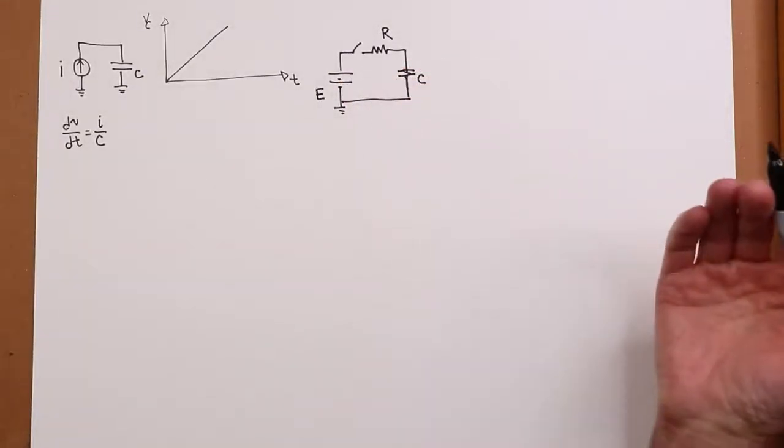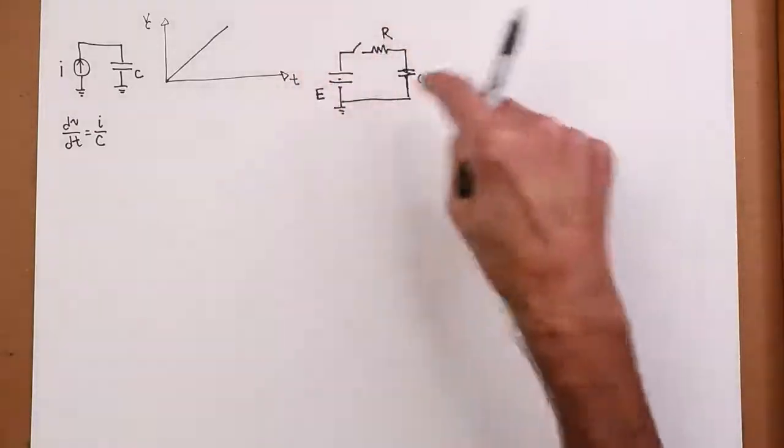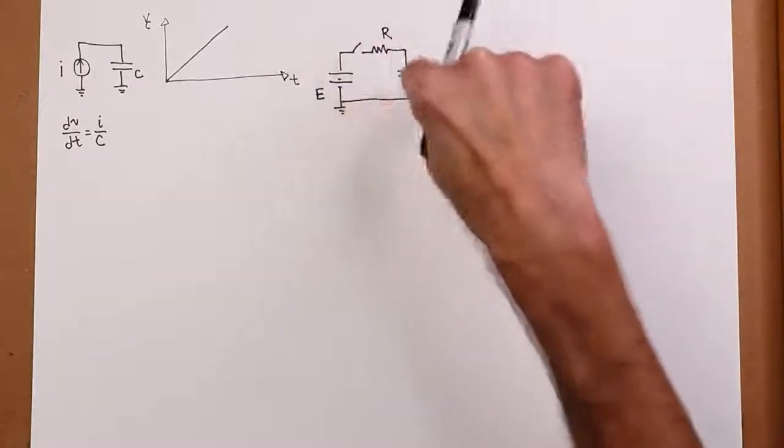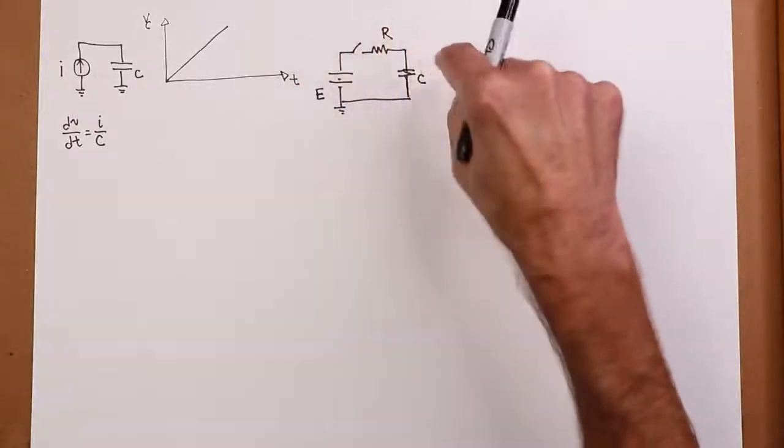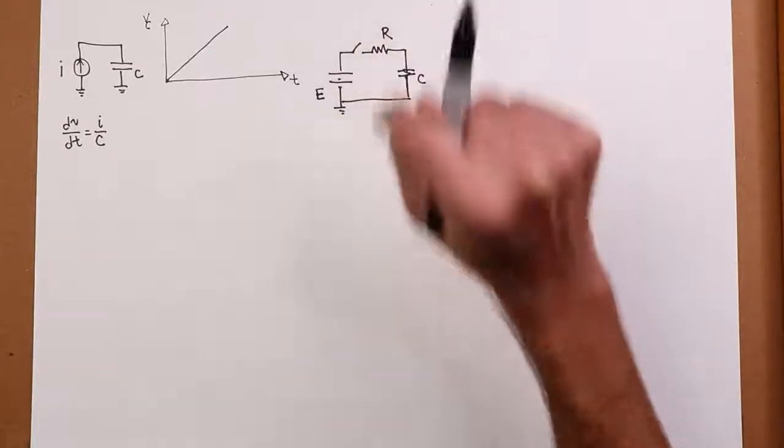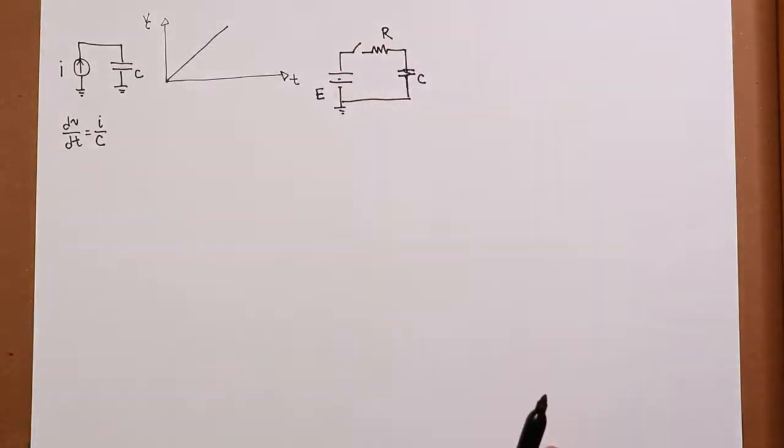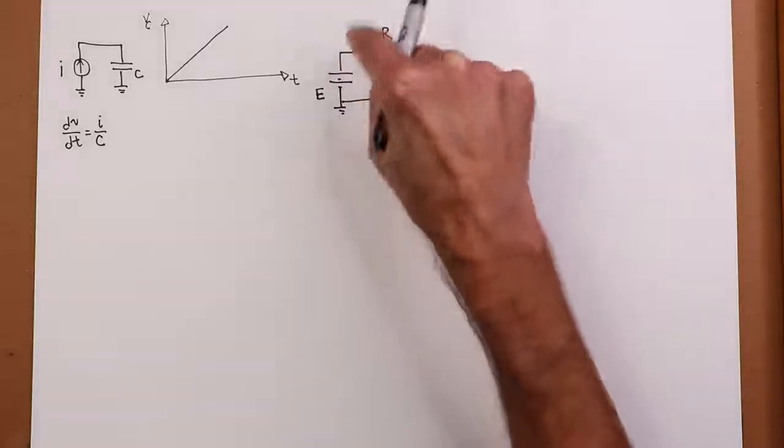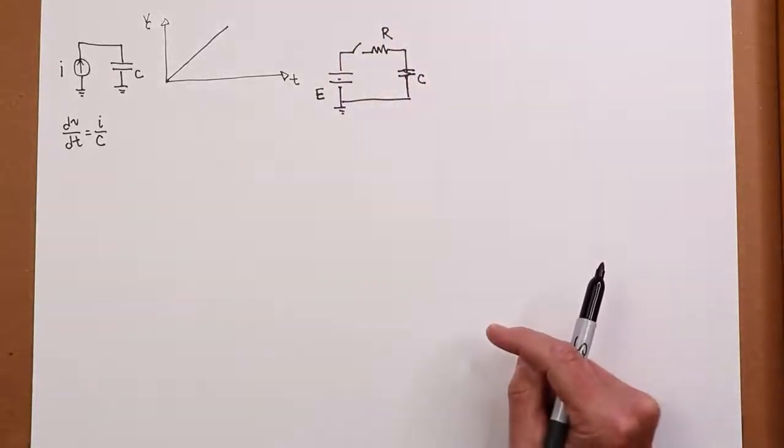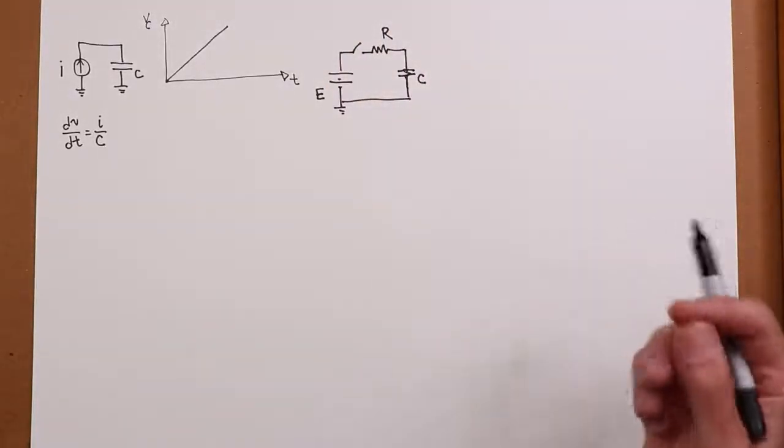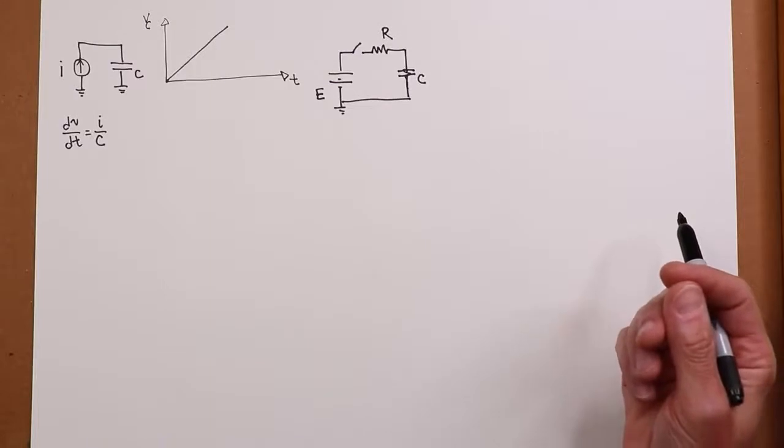At rest, with no stored charge or anything like that, there's no current flowing through here. The capacitor voltage is zero. The resistor voltage is zero. Basically, all of the source drops across the open switch. Initially, the cap is a short.